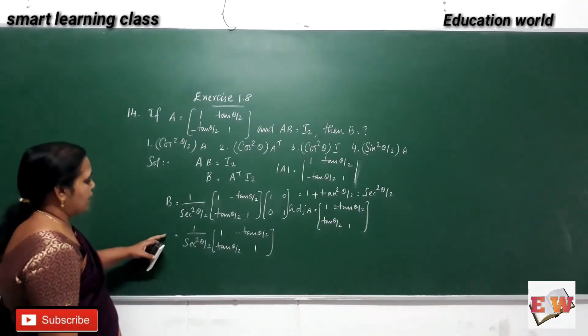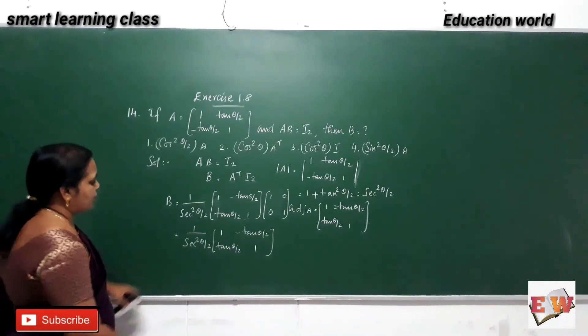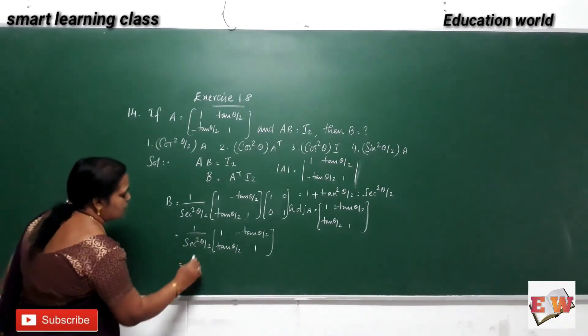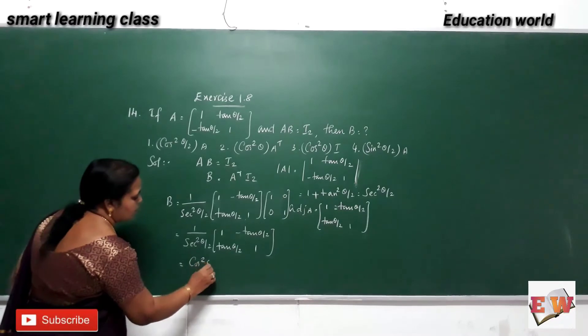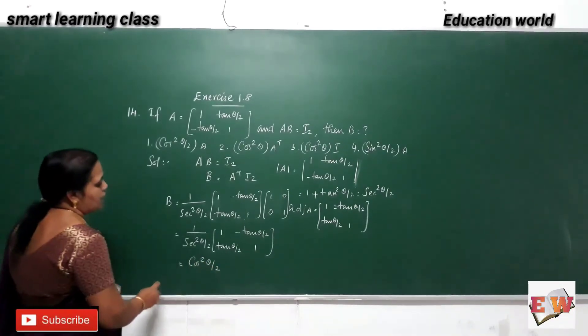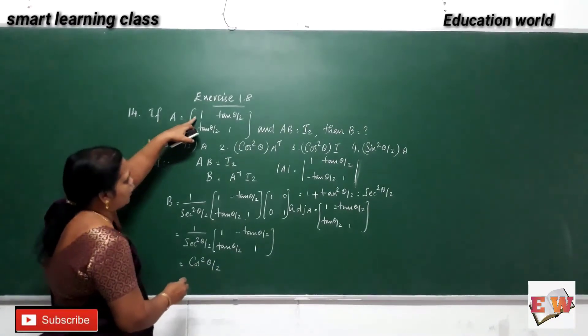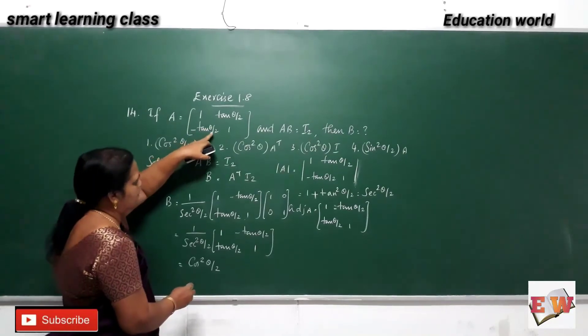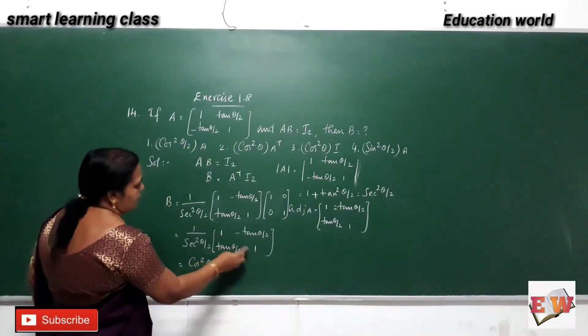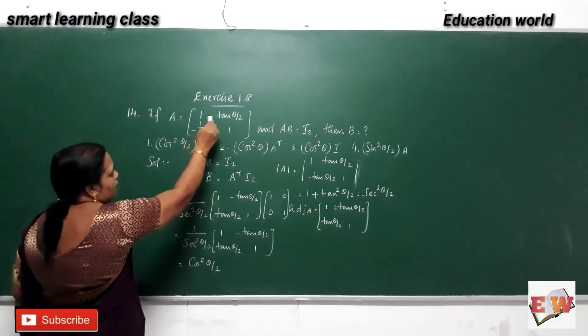What it will come? We can write this as secant square theta by 2. See, what is here? A is equal to 1 tan theta by 2, minus tan theta by 2, 1. Here the transpose is there, A transpose.